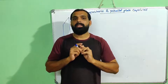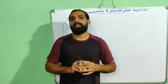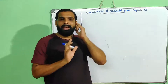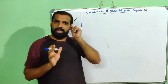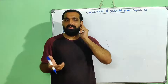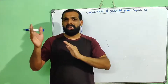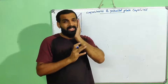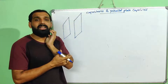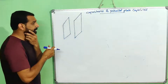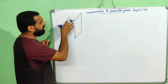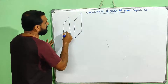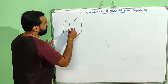Now we have a parallel plate capacitor. A parallel plate capacitor is a type of capacitor — there are also ceramic and disk capacitors used in electronics. Here we have a parallel plate capacitor with a separation distance d.